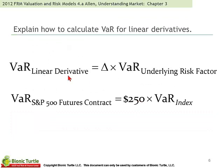The VAR of a linear derivative equals delta times the VAR of the underlying risk factor. In the case of an S&P futures contract, it's the multiple on the VAR of the index, where delta is essentially one.